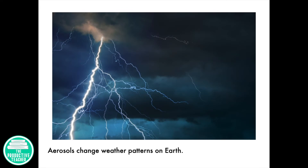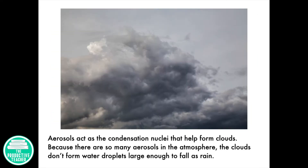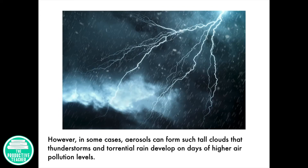Aerosols change weather patterns on Earth. Aerosols act as the condensation nuclei that help form clouds. Because there are so many aerosols in the atmosphere, the clouds don't form water droplets large enough to fall as rain. However, in some cases, aerosols can form such tall clouds that thunderstorms and torrential rain develop on days of higher air pollution levels.